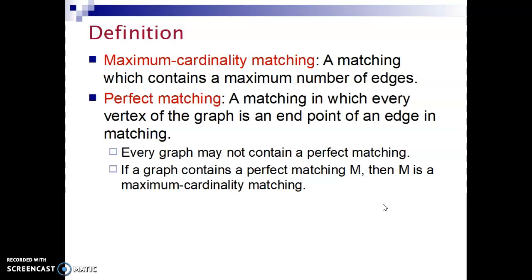We may not be able to find a perfect matching in every graph. For example, if a graph contains odd number of vertices, that graph will not have a perfect matching. If a graph contains a perfect matching M, then M is a maximum cardinality matching.